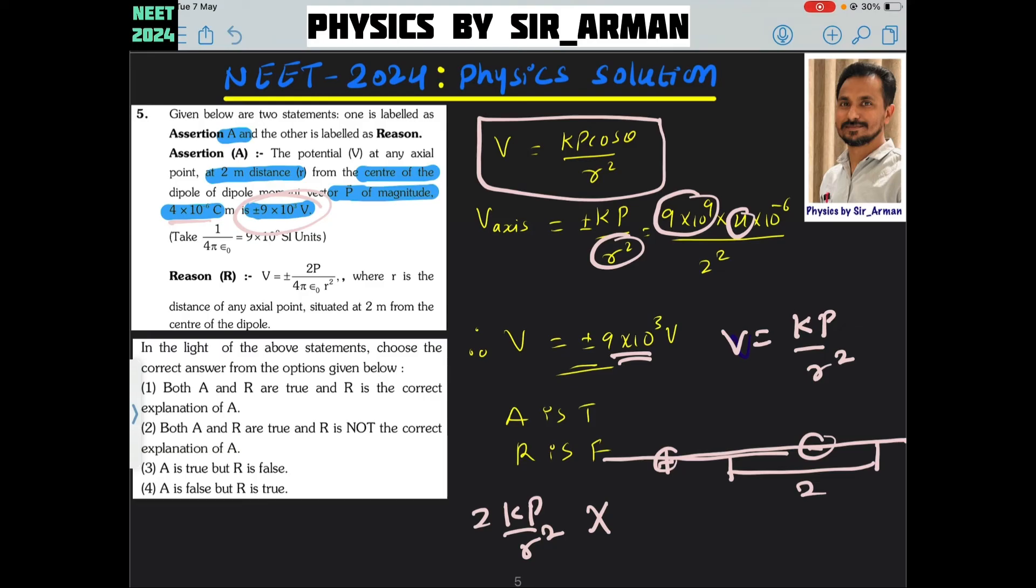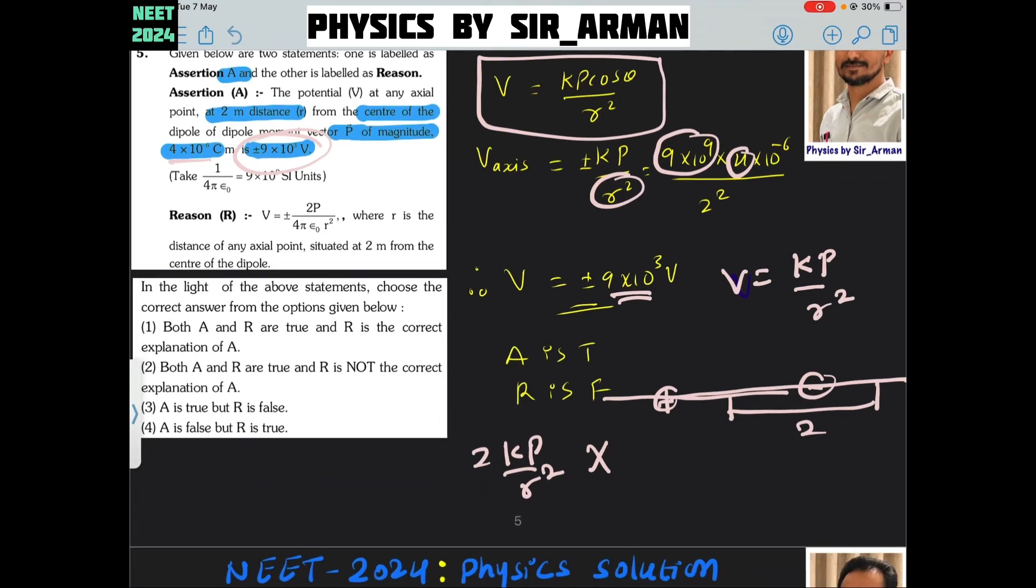Statement 1 is true and statement 2 is false. The correct answer is which one: A is true, R is false. So C is the correct one.